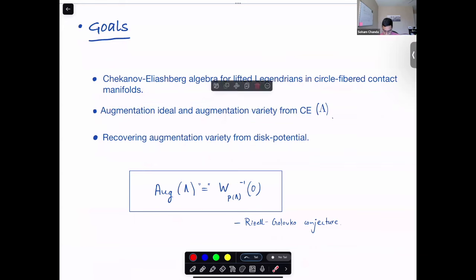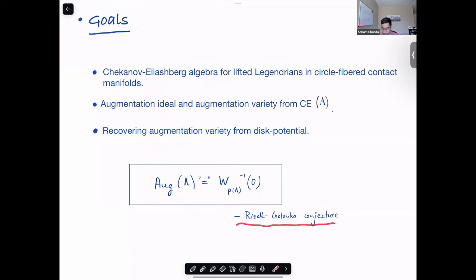And finally, I want to talk about how you can recover the augmentation variety from the disk potential in certain cases. In particular, we'll have an equation where the augmentation variety is equal to the zero set defined by the disk potential of the projection of the Legendrian. This confirms a conjecture posed by Dimitri Grouzel and Golovko in 2019.